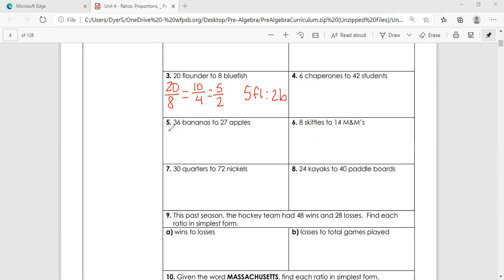Let's keep going. So we have 36 bananas to 27 apples. So again, we're going to try and find that greatest common factor. If you recognize that it's nine, so we're going to divide by nine here and we're going to get four to three. So another way to write it is four bananas to three apples.